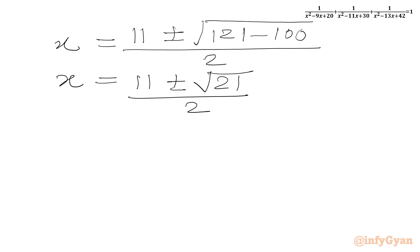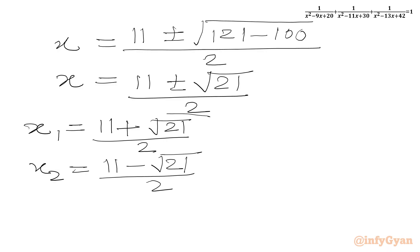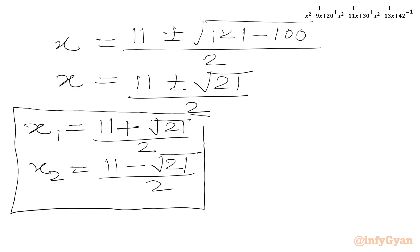So our answers are: x₁ equals (11 plus square root of 21) over 2, and x₂ equals (11 minus square root of 21) over 2. I hope friends you will like this video. Thank you so very much for watching.